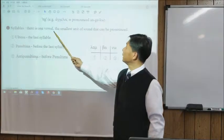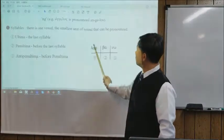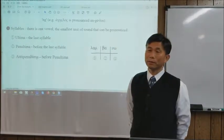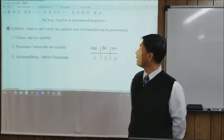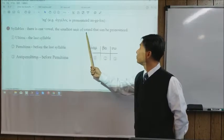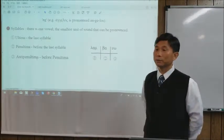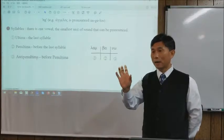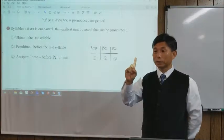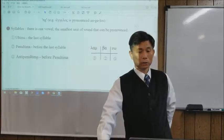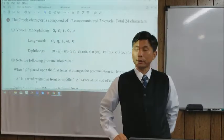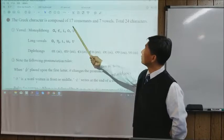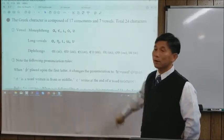A syllable is the smallest unit of sound that can be pronounced. In one syllable, there is at least one vowel. In order to make one sound, one vowel has to exist. Greek is composed of 17 consonants and 7 vowels.